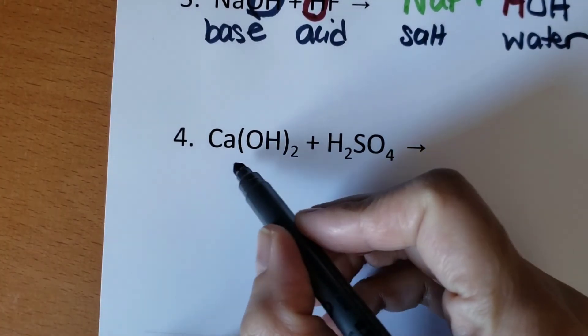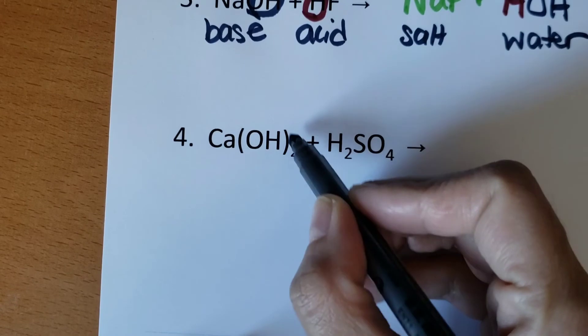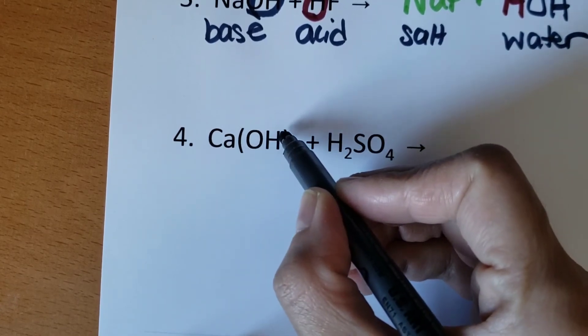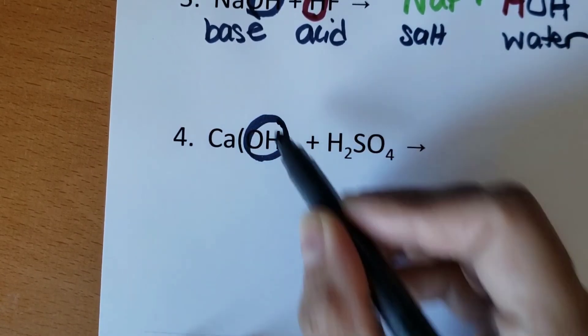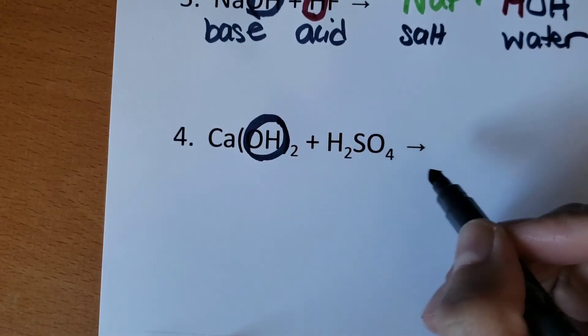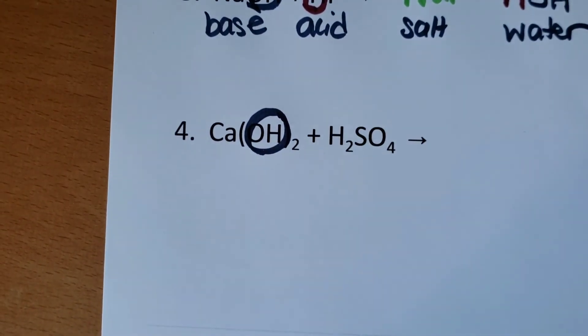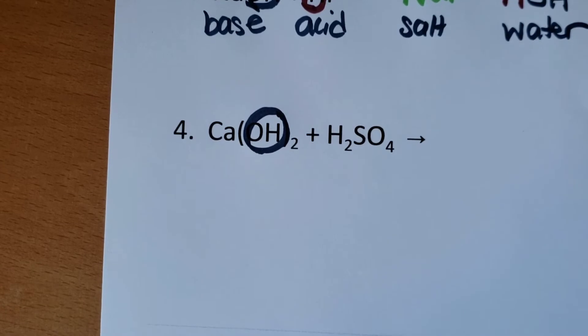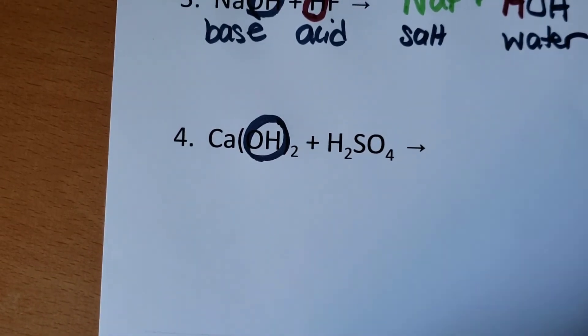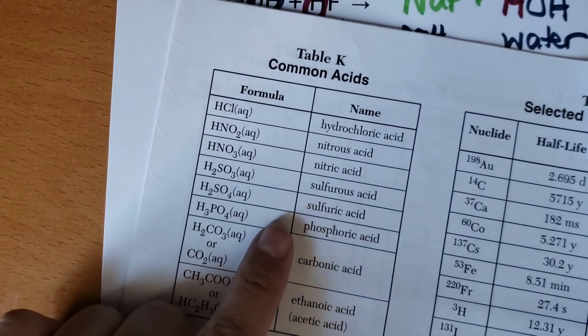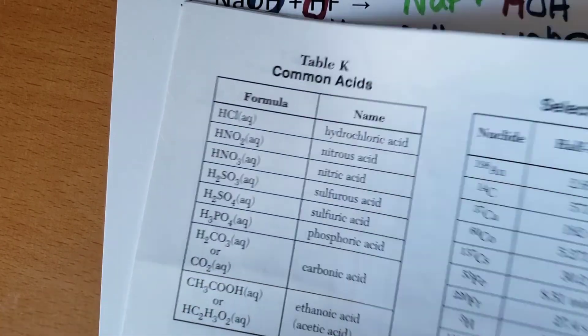So here we have hydroxide. It's already in parentheses. So there's our base is hydroxide. And this is sulfuric acid. Remember that the acids are found on reference table K. So you don't have to guess what's an acid. Again, you can see sulfuric acid here.